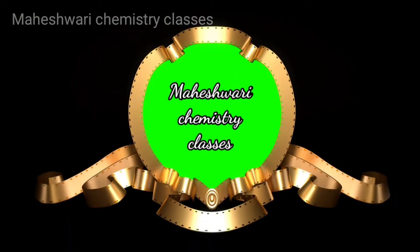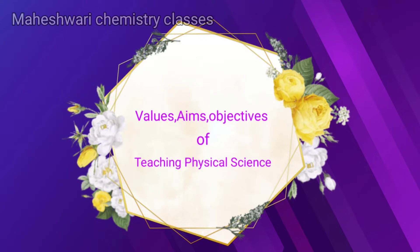Hi and welcome to Maheshwari Chemistry Classes. Today my topic is Physical Science Methodology, Unit 2. Unit 1 I am going to conduct a test. I am going to talk about APJ Abdul Kalam. So today's topic is Unit 2, that is Values, Aims and Objectives of Teaching Physical Science.